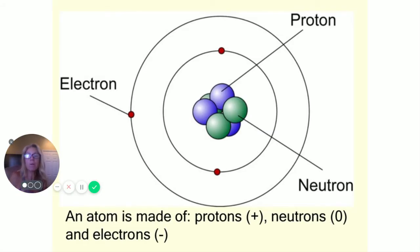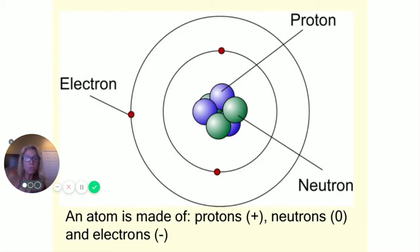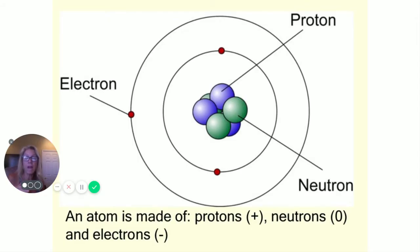The atomic number by definition is always equal to the number of protons. In a neutral atom, however many protons you have, you'll have the same number of electrons — because protons are positive and electrons are negative. But do not say the atomic number equals the number of electrons, because an atom can gain and lose electrons. If you gain or lose an electron, that's called an ion.